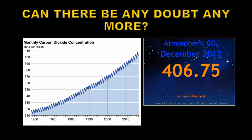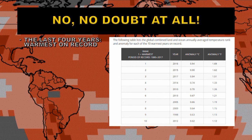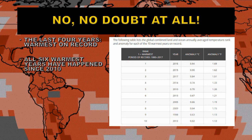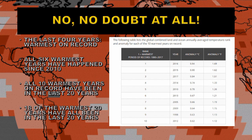Can there be any doubt anymore? Carbon dioxide is continuing to rise — we may well get above 410 parts per million this year for the first time in several million years. The answer is no, there's no doubt at all. If you look at the chart on the right hand side, you'll see the 10 warmest years ranked in order with the year and the anomaly in both centigrade and Fahrenheit. The last 4 years are all the warmest on record. All 6 of the warmest years have happened since 2010. All 10 warmest years on record have been in the last 20 years. 18 of the warmest years on record have all been in the last 20 years. This gives pretty much a picture of global warming.